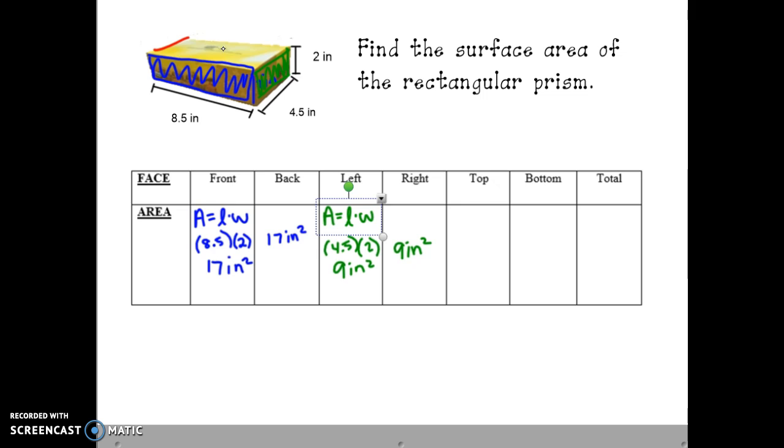For the top face, I know that that is congruent to the bottom face. The bottom face has dimensions of 8.5 by 4.5. So the top face has the same dimensions. So area equals length times width because it's a rectangle. The length is 8.5 and the width is 4.5. 8.5 times 4.5 is 38 and a quarter or 38.25 square inches. Therefore, the bottom face also has an area of 38.25 square inches.